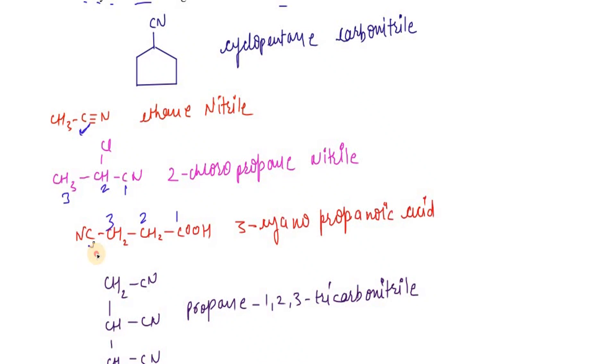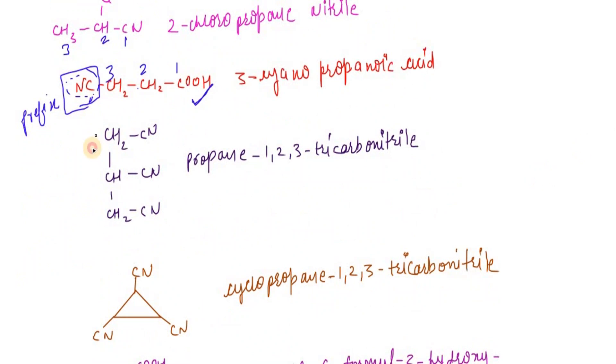If you look at this: 1, 2, 3, 4. Here, carboxylic acid is the principal functional group and this is the secondary functional group. Now the question is whether should we consider that 4th carbon which is in the nitrile. Because when we use cyano, we are representing CN as our prefix, so that time we do not need to consider that carbon. So 1, 2, 3: 3-cyanopropanoic acid. Again, 1, 2, 3: propane 1,2,3-tricarbonitrile.